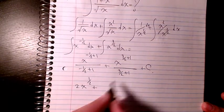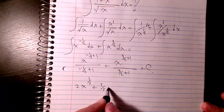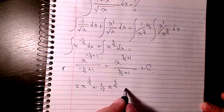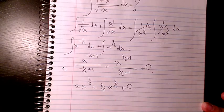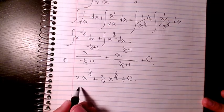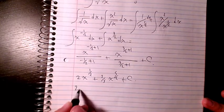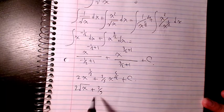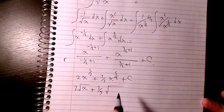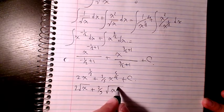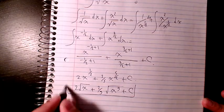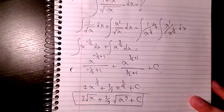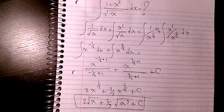That gives us 2x to the power of 1/2 plus 2/5 x to the power of 5/2 plus C, or written in radical form: 2√x plus (2/5)√(x⁵) plus C. That's the final answer.